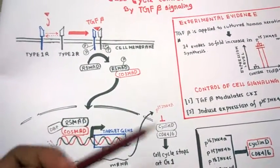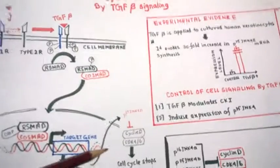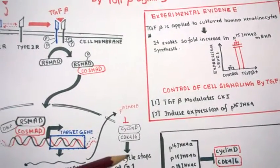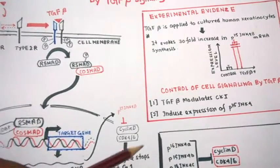Experimental evidence shows that when TGF beta is applied to cultured human keratinocytes, one sees a 30-fold increase in P15 mRNA expression level.